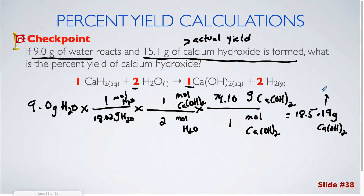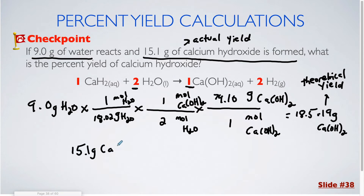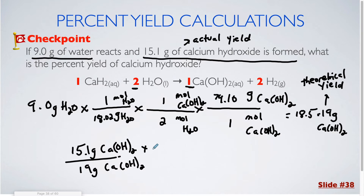What I just determined is the theoretical yield. Now, in order to determine the percent yield, we saw that it is the actual yield divided by the theoretical yield times 100. So I'm going to take my 15.1 grams that they told me was actually made, divide that by the 19 grams I should have made, and multiply by 100. Rounding to two significant figures, that comes out to 79%.